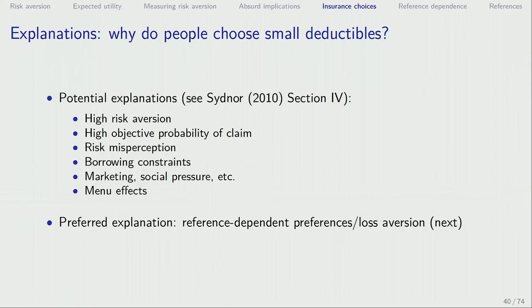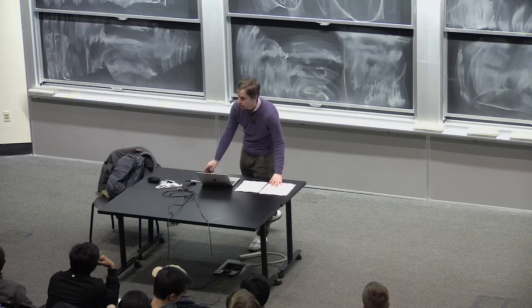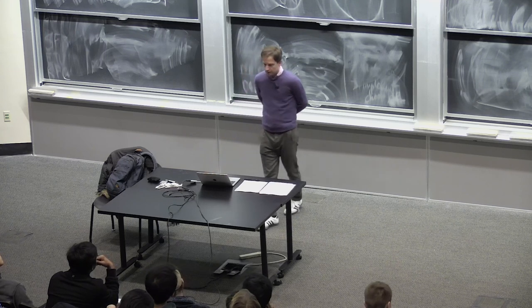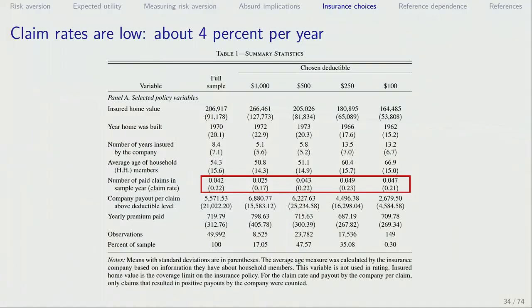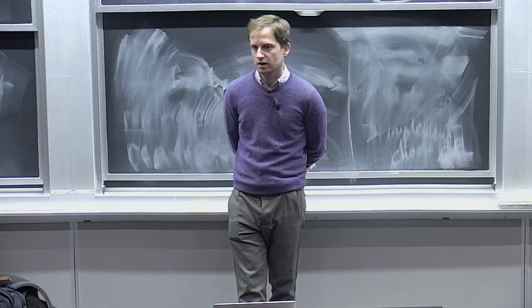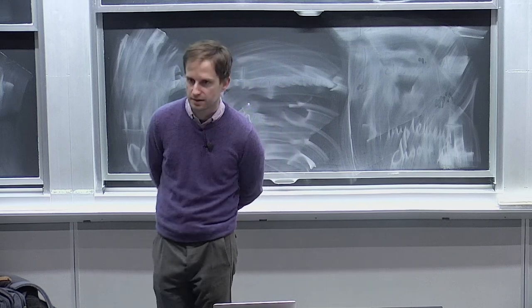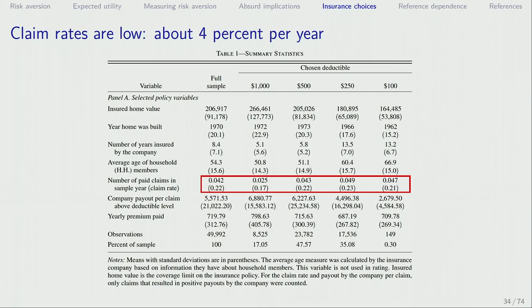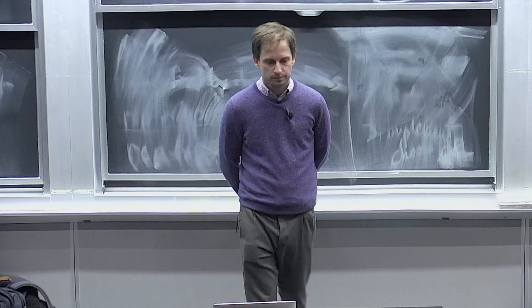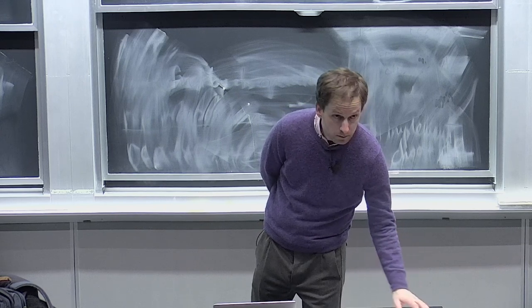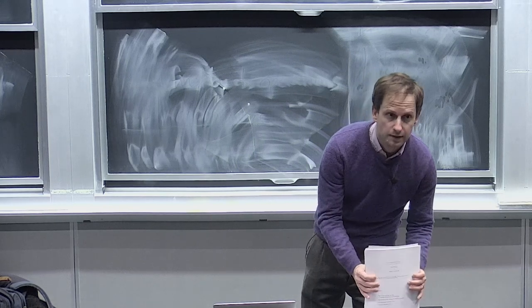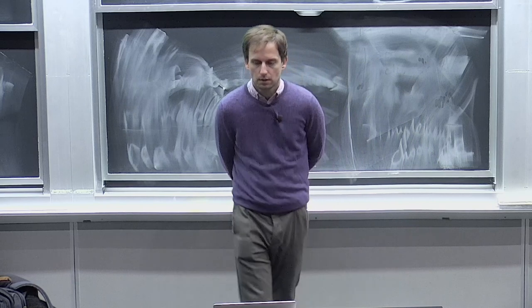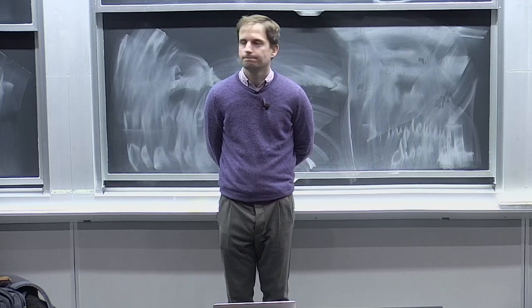A student asks whether the probability of a claim correlates with which deductible people chose. There is a weak negative correlation: people who choose $1,000 have a 2.5% claim rate versus 4.7% for those choosing $100. Another student notes that the paper uses a regression to control for the fact that those with lower deductibles may file more claims.